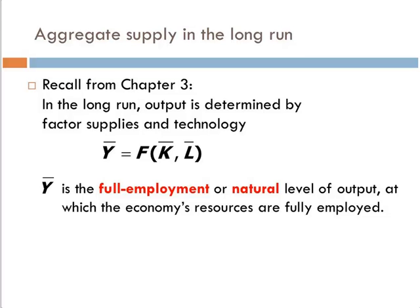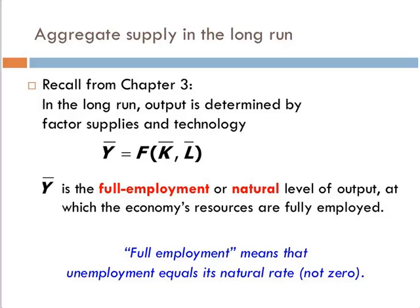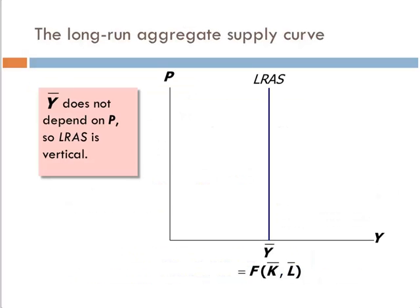In the long run, this makes perfect sense. In the short run, though, we may not always have our inputs fully employed. Y-bar, or this natural rate of output, just doesn't fluctuate with price level. Why? Because prices are flexible. And when prices are flexible, the markets can move around. So we can always fix the imbalances that creep up within the economy.